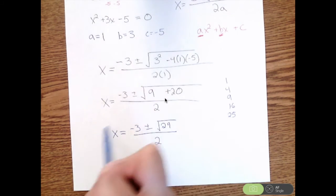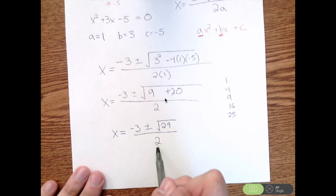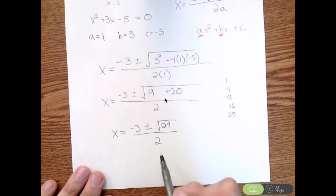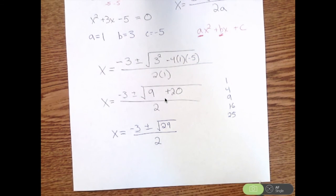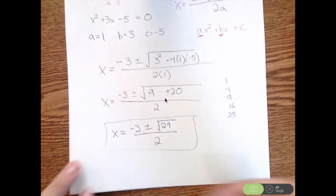The ways you would look to try and simplify this equation is you want to see, can I take negative 3 divided by 2? Negative 3 divided by 2 is going to give you a decimal, so I'm going to leave that alone. And can I take the square root of 29 divided by 2 and simplify that? There's nothing you can do, so this alone will be my answer.